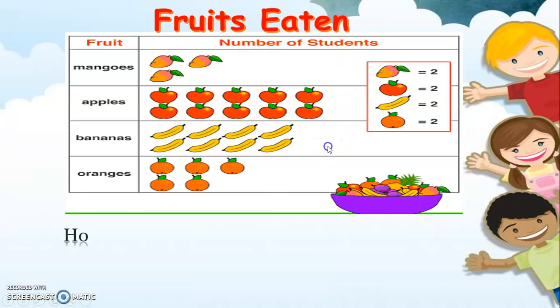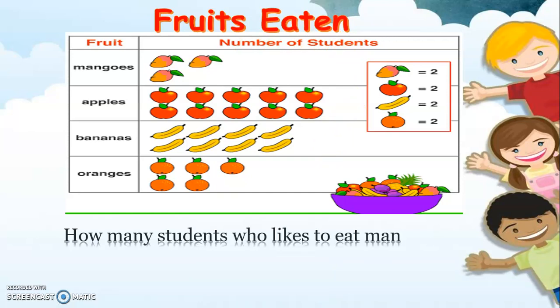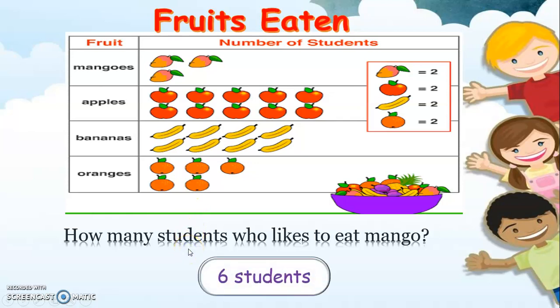How many students like to eat mango? As we see, there are only three mango pictures, but each mango is equal to two. Counting: two, four, six. There are six students who like to eat mango.